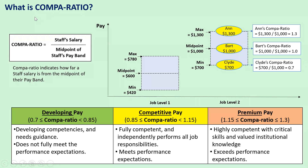So, what is compa-ratio? This is the formula for compa-ratio. Compa-ratio is also called comparison ratio. To get a staff's compa-ratio, divide their salary by the midpoint of their pay band. Compa-ratio tells you how far a staff's salary is from the midpoint of their job level's pay band.